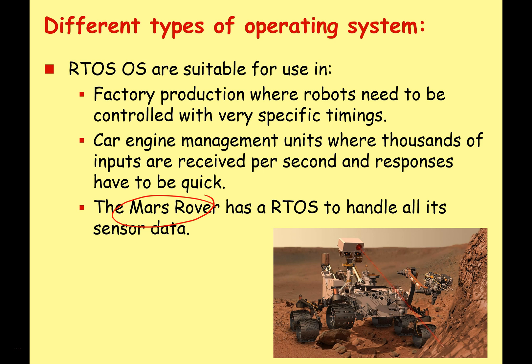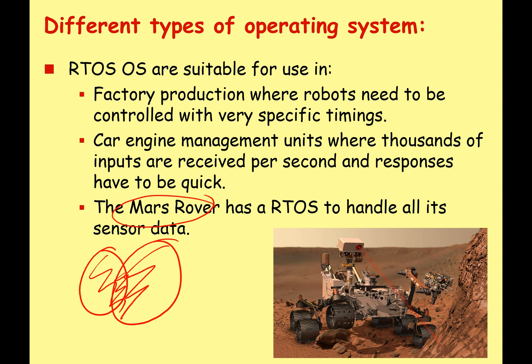As we finish this video, the key point is to remember that operating systems aren't just one of these categories. There's lots of overlap — something might be multitasking, or multi-user, or both, and might also be operating in a real-time environment. These categories are blurred together with a lot of gray area. Make sure you know the definitions of all these types of operating systems and know when and where we might use them. Thank you very much, and good luck with your studies.